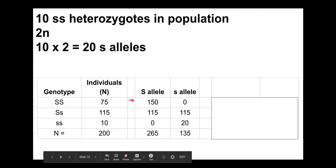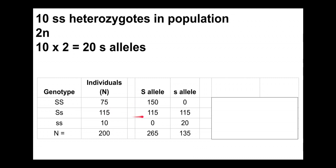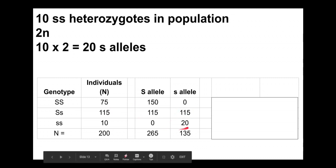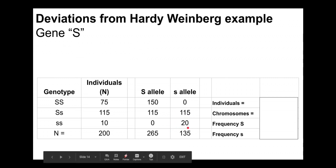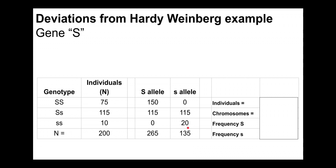So homozygous dominants contribute only big S alleles, heterozygotes contribute both big S and little s alleles, and homozygous recessives contribute only little s alleles. I encourage you to pause the video here and see if you can calculate out the frequency of the big S and little s allele.